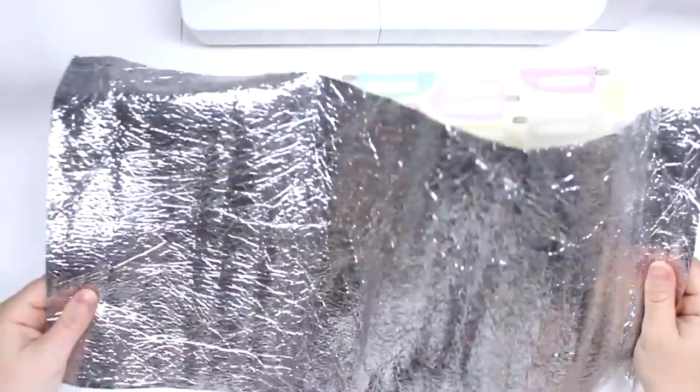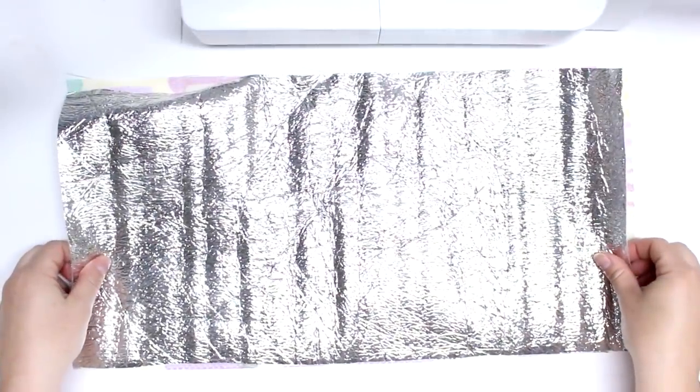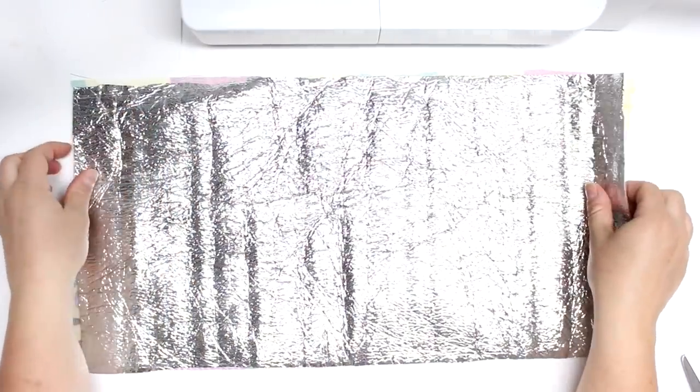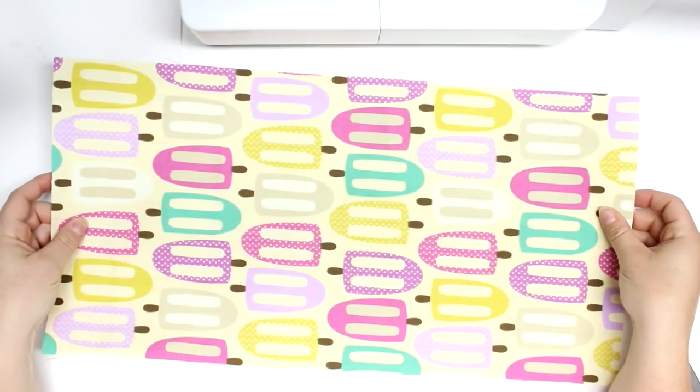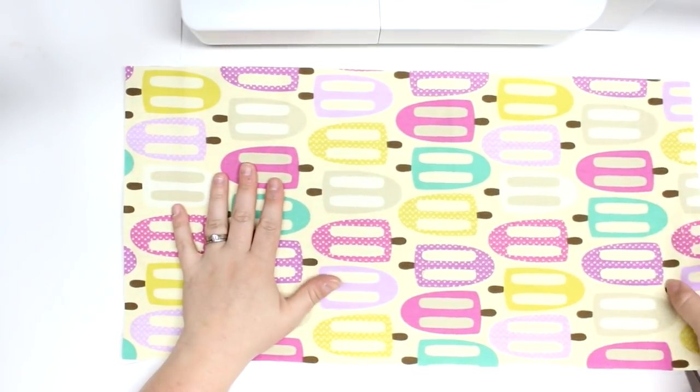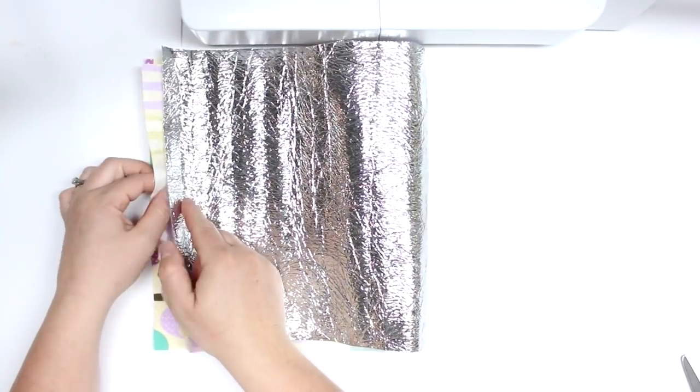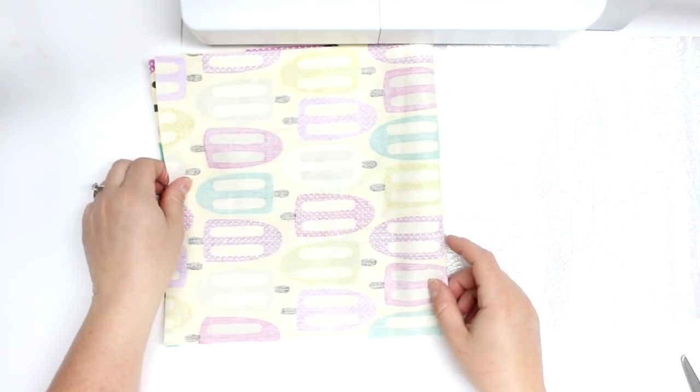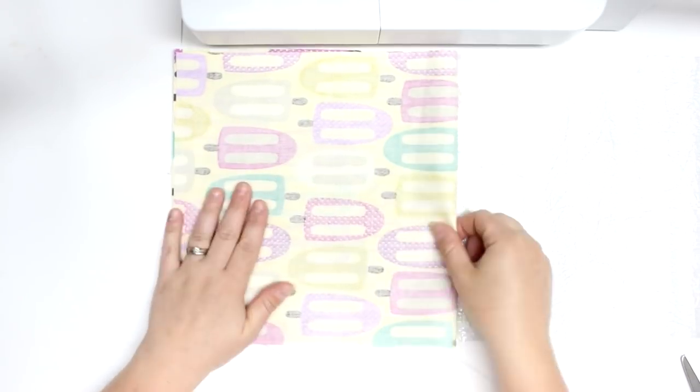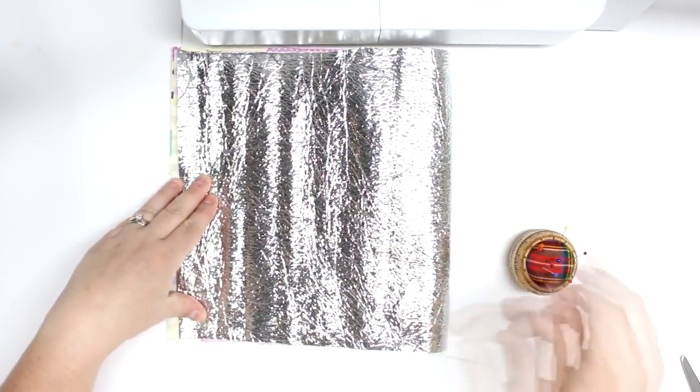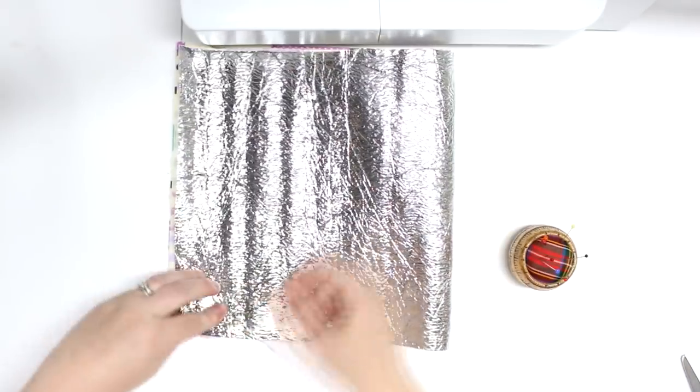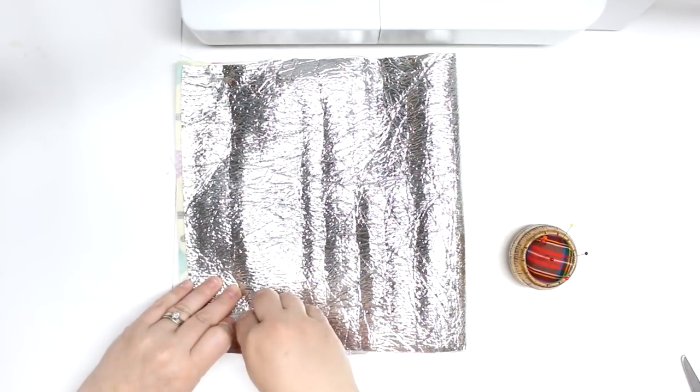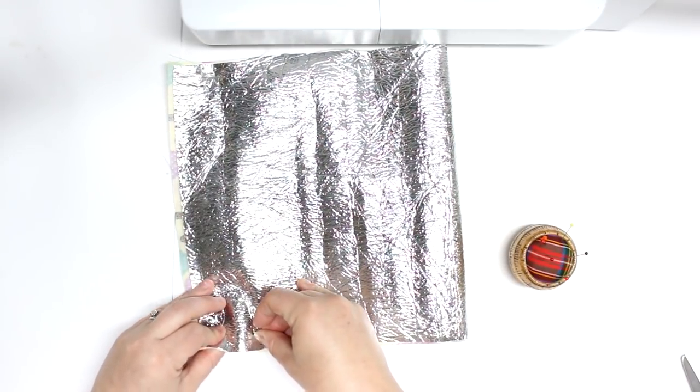Then we're going to take our insulating material. Because this has a shiny side, we're going to face the shiny side to the inside of the bag, so I'm just going to put the dull side on the back of the outer fabric. Then I'm going to fold it in half lengthways, line up the sides, and then I'm going to pin that all into place because I'm going to be sewing down the two short sides.